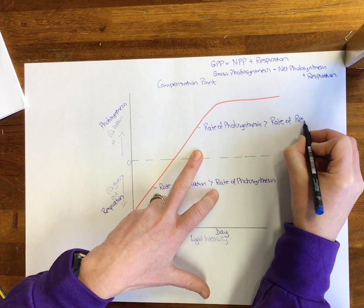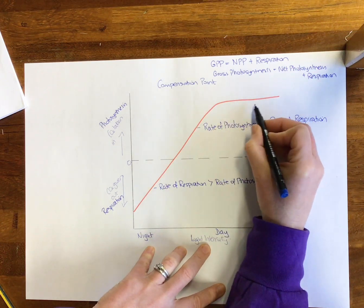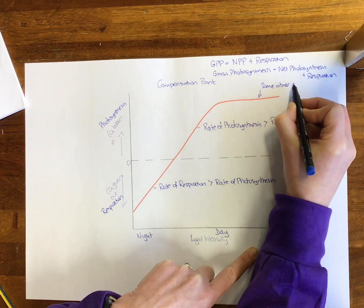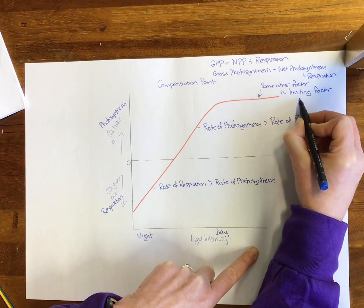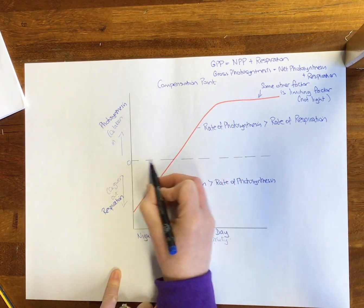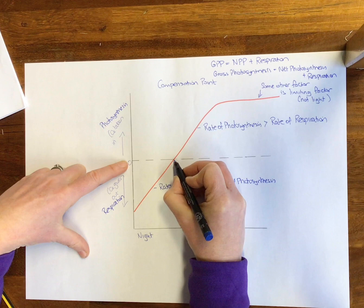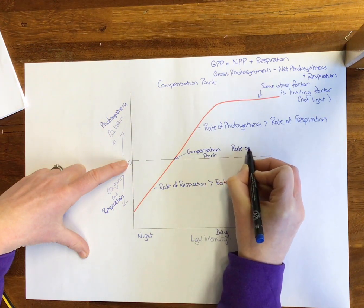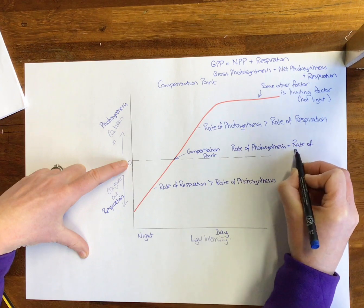More carbon dioxide has to be taken in than what is being produced by respiration in the plant. At the point where the graph levels off, this is our limiting factors graph — light intensity is still increasing but some other factor, such as temperature, is now limiting. It's no longer the factor on the axis that is limiting. At the point where the line crosses zero, no carbon dioxide is being given out or taken in. This is called the compensation point, when the rate of photosynthesis equals the rate of respiration — typically at sunrise or sunset.